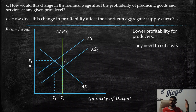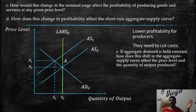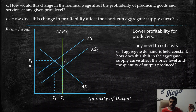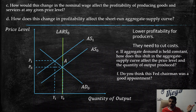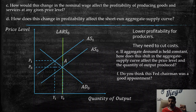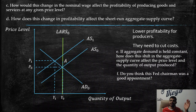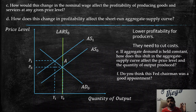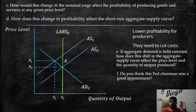Part d: How does this change in profitability affect the short-run aggregate supply curve? It shifts to the left, as shown. Part e: If aggregate demand is held constant, how does this shift in aggregate supply affect the price level and output? We have P1 higher than P0 and Y1 lower than Y0. Part f: Was this Fed chair a good appointment? Clearly not — the expectation of higher inflation caused a contraction in the economy with rising prices, which is harmful.